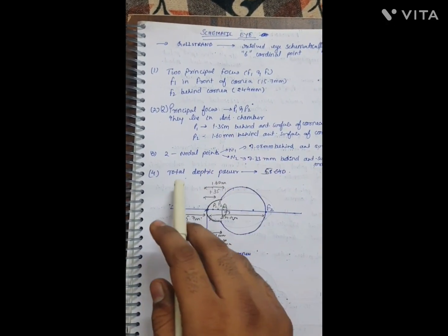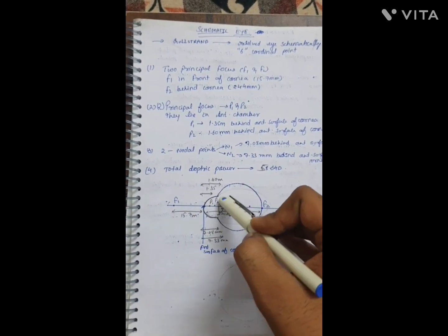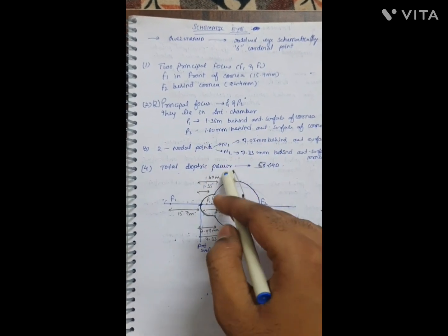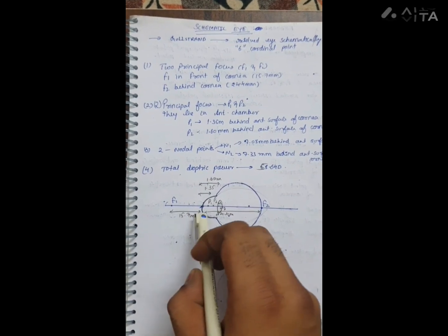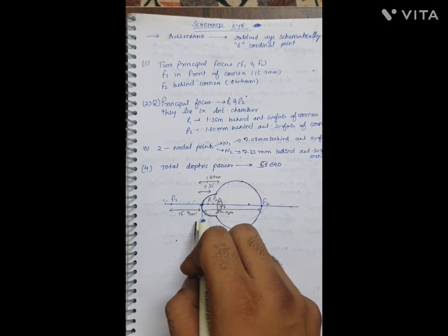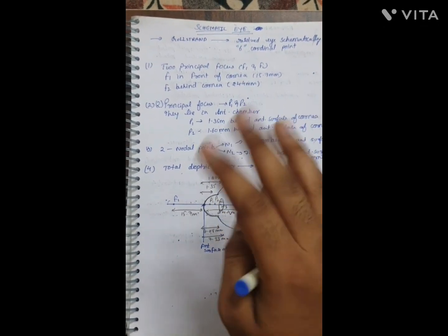There are two nodal points N1 and N2 inside the lens. N1 will be 7.08 millimeter behind the anterior surface of cornea, and N2 will be 7.33 millimeter behind the anterior surface of cornea.